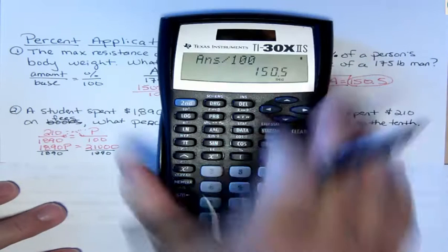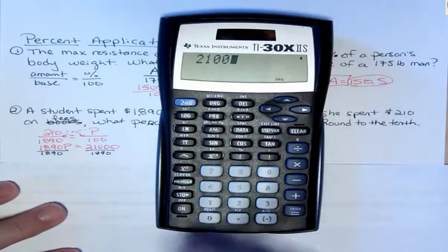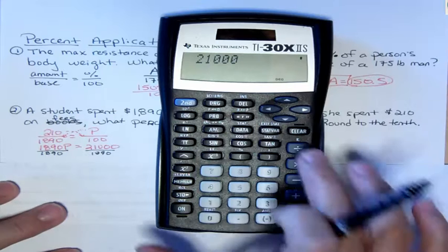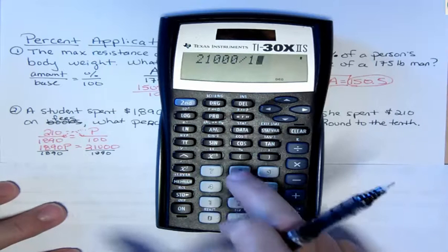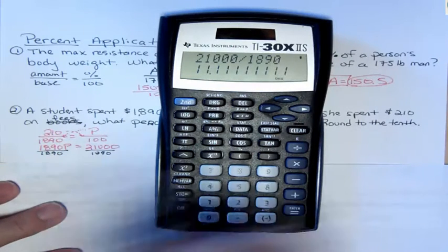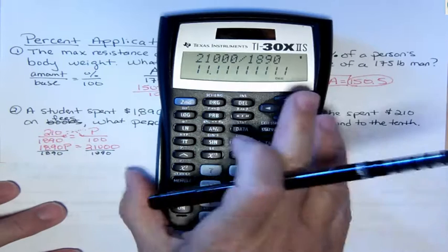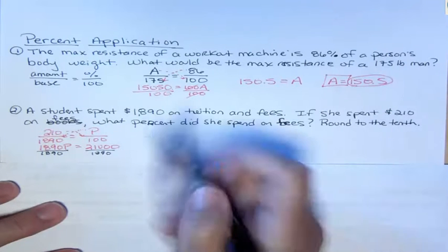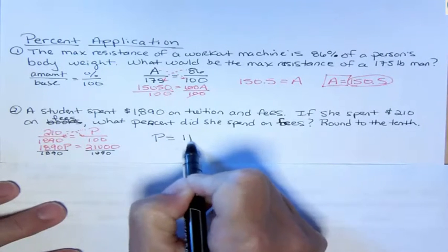And it says round to the tenth. So let's see what we get here. 21,000 divided by $1,890. And that gives us 11.111111111. So would that be rounded? Well, rounded to the nearest tenth would just be 0.1 or one tenth. So that would be P equals 11.1.